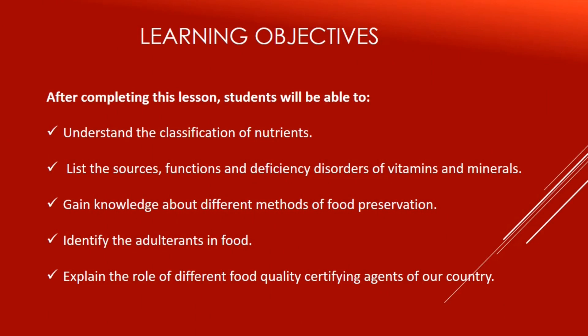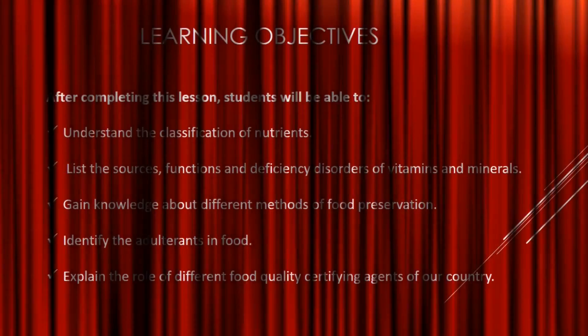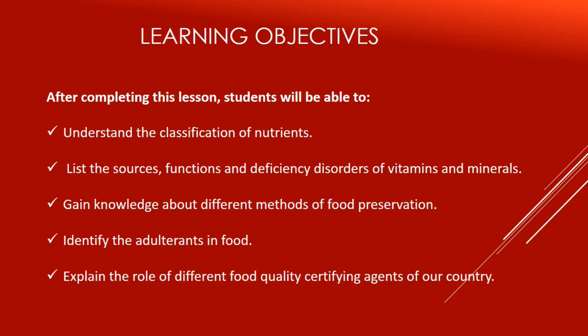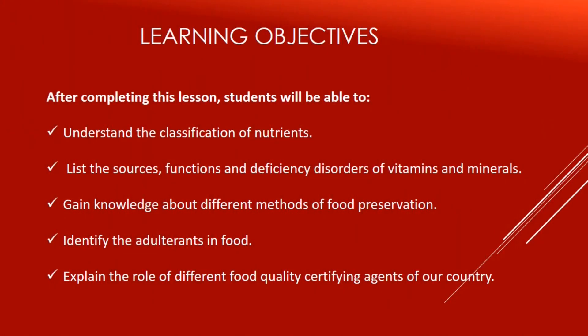After completing this session, students will be able to understand the classifications of nutrients, list their sources, functions, and deficiency disorders of vitamins and minerals, gain knowledge about different methods of food preservation, identify the adulterants in food, and explain the role of different food quality certifying agents of our country.